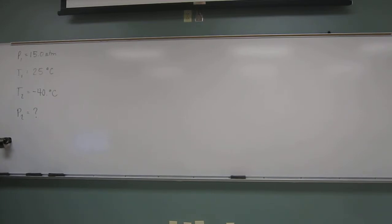It reads, a steel container of nitrous oxide at 15.0 atm is cooled from 25 degrees Celsius to negative 40 degrees Celsius. What is the final pressure of the system at constant volume?